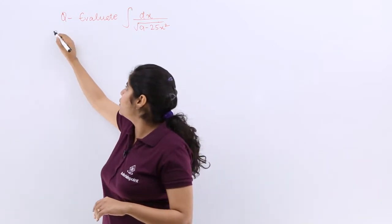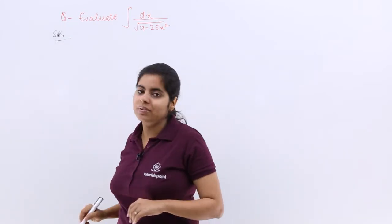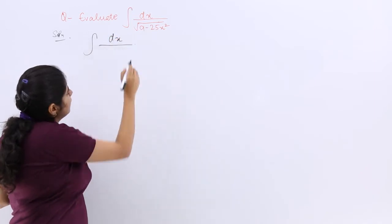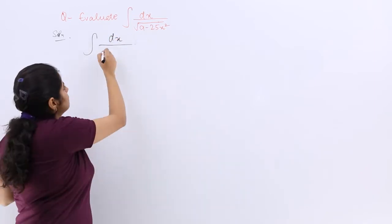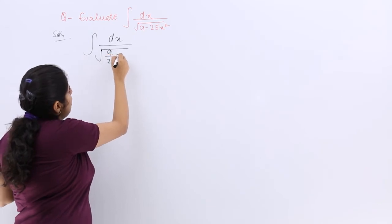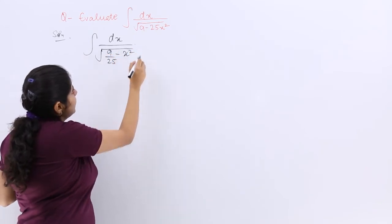What I mean to say, I will do it for you. I write solution. Now see what I am going to do. I have here dx. Then I have under root 9 upon 25 minus x square straight away.